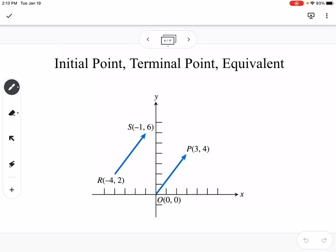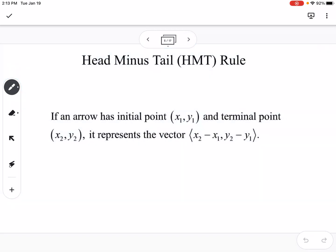You can have two different vectors, RS and OP, that are equivalent vectors. Even though they don't have the same initial point and terminal point, if you were to move RS onto OP, they would be the same vector. We'll talk about how you find the components of the vector if it's not in standard form, and that is the head-minus-tail rule. If you have an initial point and a terminal point, you basically subtract the x values and subtract the y values to find the component form of the vector.